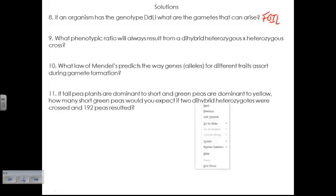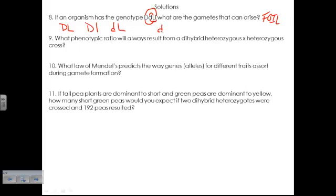So FOIL is the first in each pair. We have the big D and big L for the first, so that's a gamete. And then outside, the outside of each pair, big D and little l, and then the inside, little d and big L, and then the last in each pair is the little d and little l. So you're going to end up with four gametes here.